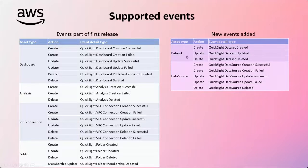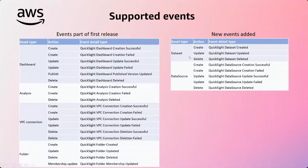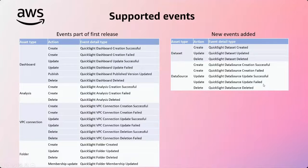Coming to the right, the new events that have been recently added to the set of event logs: one is for the dataset, where you can see create, update, and delete actions with the event data type of QuickSight dataset created, dataset updated, or deleted. And same for the data sources — we have the actions like create, update, and delete, where one of the create actions is for the error indication of a failed scenario, and update is the same, where the data source update failed.